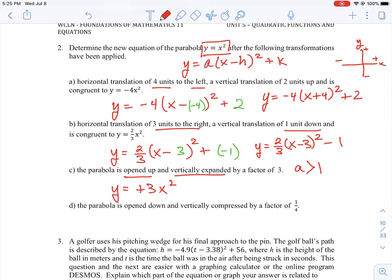Where the 3 determines that we're vertically expanding or stretching it vertically along the y-axis and it opens up. Now, the reason it opens up is because it's a positive value. So normally we don't write the positive 3 in. We would just write it as simply 3x squared. If we open down, we would have to include the minus sign, which is what the next question is.